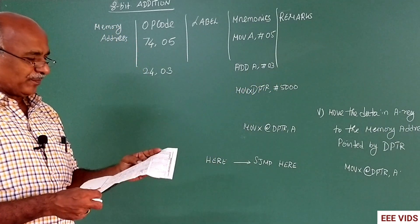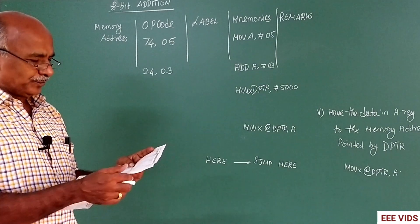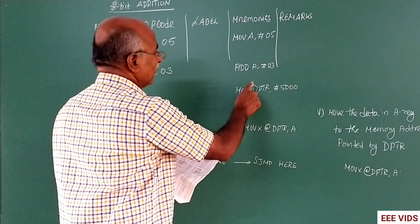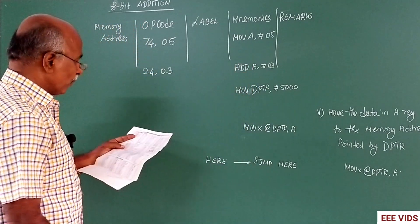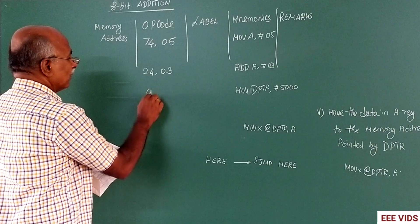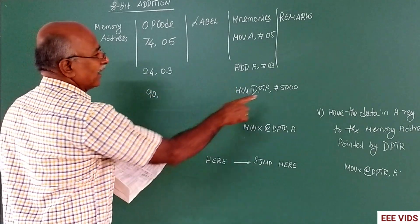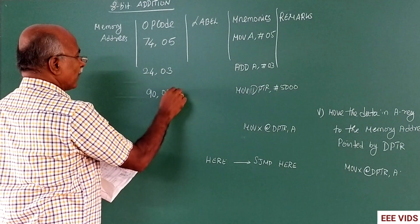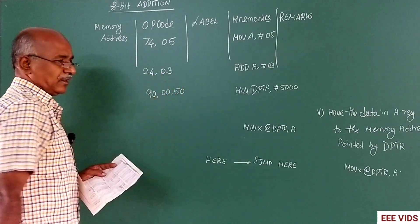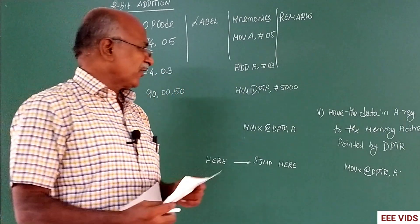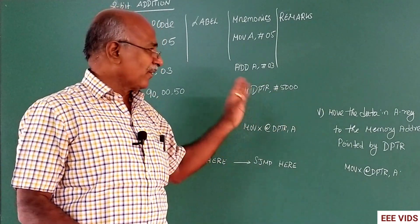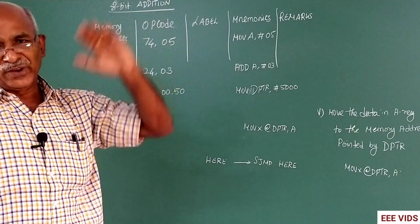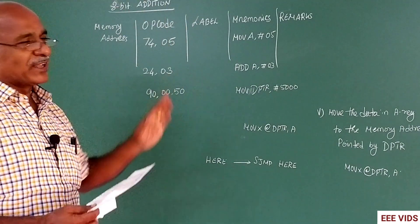MOV X@DPTR. MOV DPTR, MOV X@DPTR, 5000. Here opcode 90. In the 5000, first lower order, then higher order. First lower order, higher order. 5000, it takes 00 and 50 in locations.